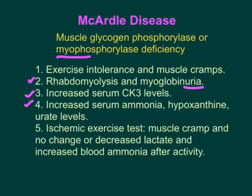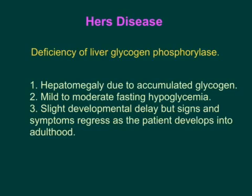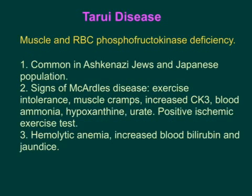Hers disease is deficiency of liver glycogen phosphorylase and is one of the milder disorders. Patients have mild hepatomegaly due to glycogen accumulation, mild to moderate fasting hypoglycemia with signs like fainting, anxiety, and dizziness. There is slight developmental delay, but signs and symptoms regress as the patient develops into adulthood.